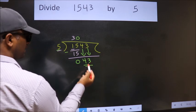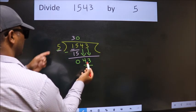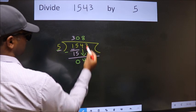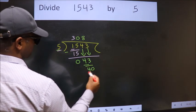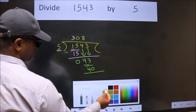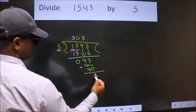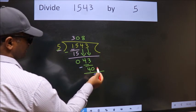So 43. A number close to 43 in the 5 table is 5 times 8, which is 40. Now we subtract. We get 3.